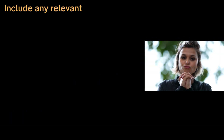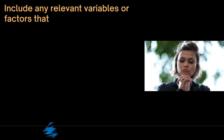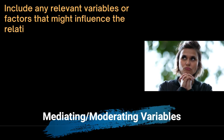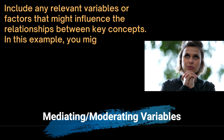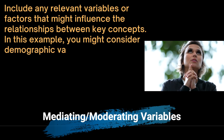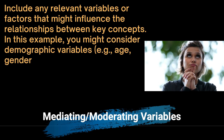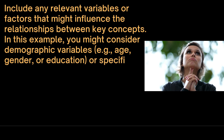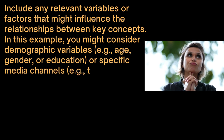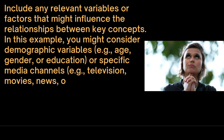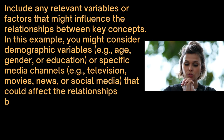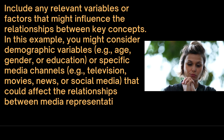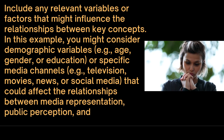We need to include any relevant variables or factors that might influence the relationships between the key concepts. In this example, we might consider demographic variables such as age, gender, or education, or specific media channels — for example television, movies, news, or social media — that could affect the relationships between media representation, public perception, and stereotypes.